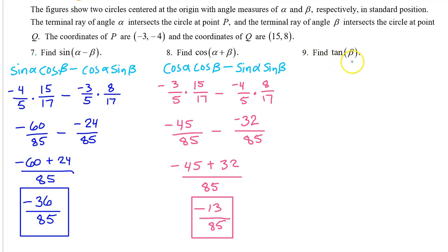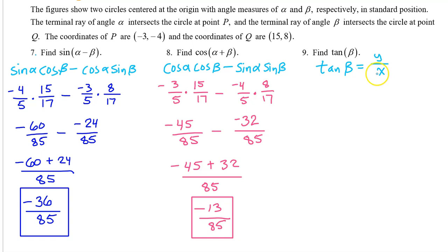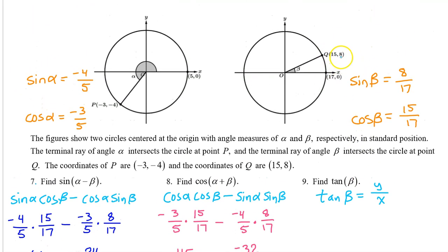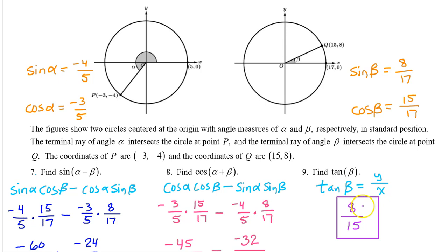Number 9. For this one we don't need a fancy memorized rule. From Topic 3.2, the tangent of an angle is the y value divided by the x value. Looking at the intersection point Q with coordinates 15, 8, tangent of beta is simply y over x, which is 8 over 15.